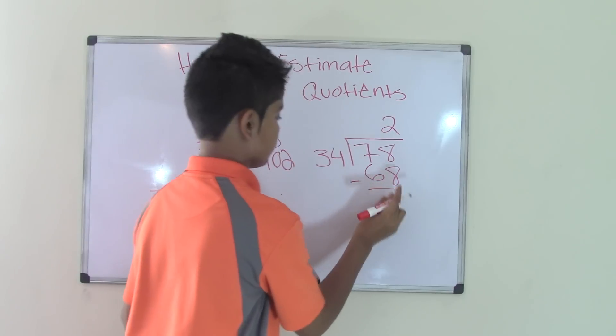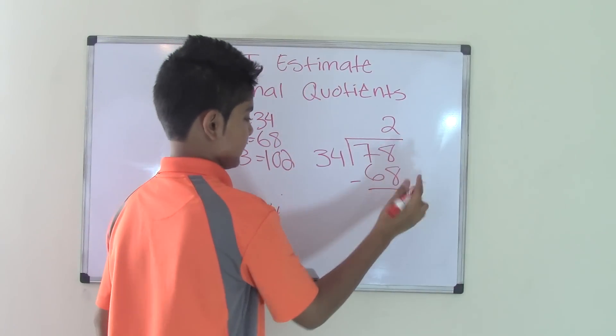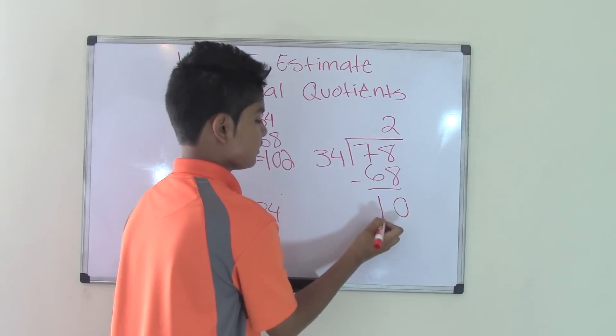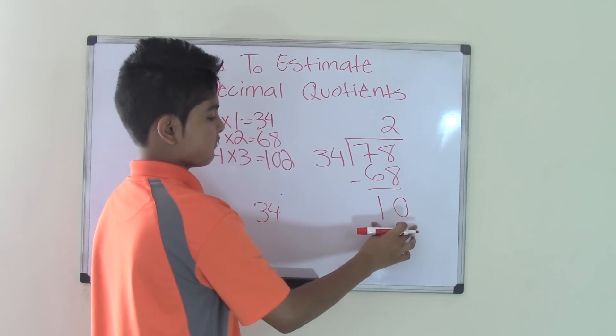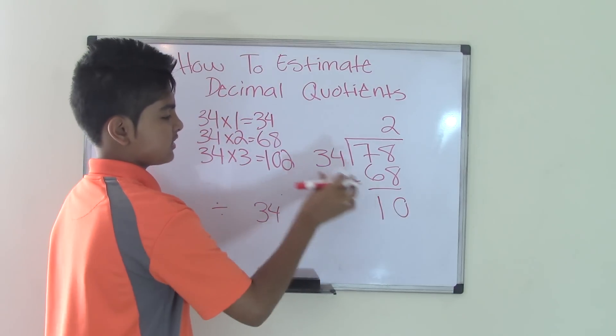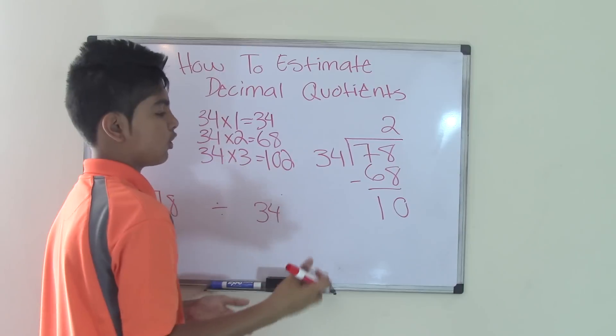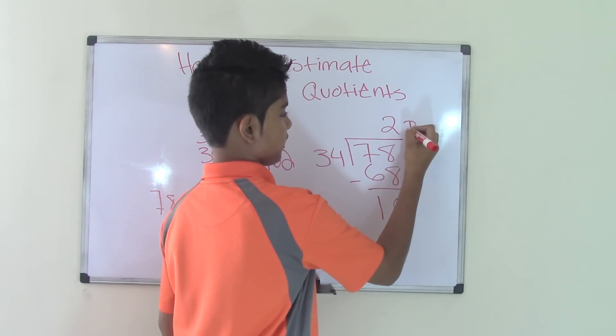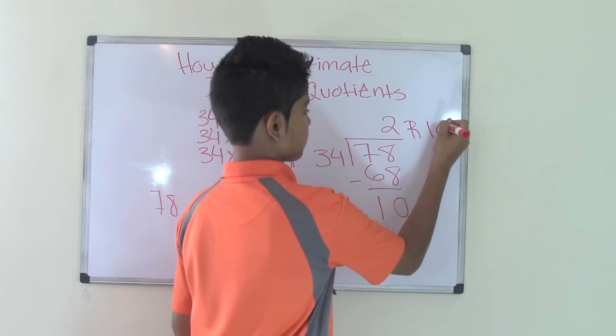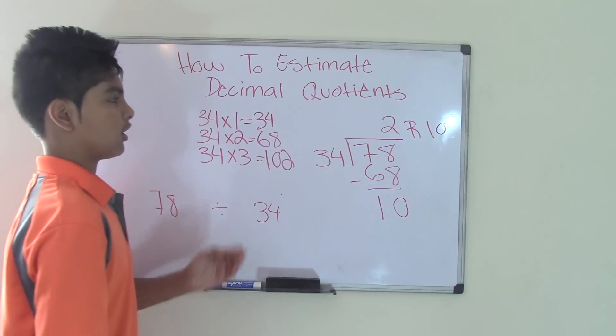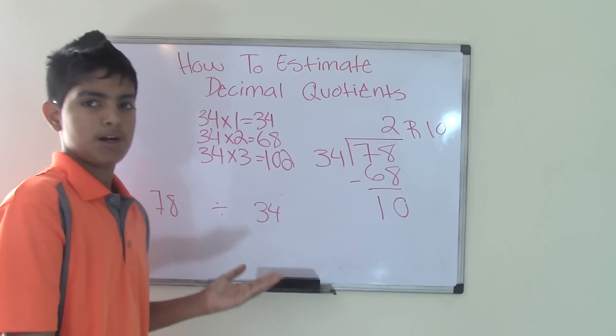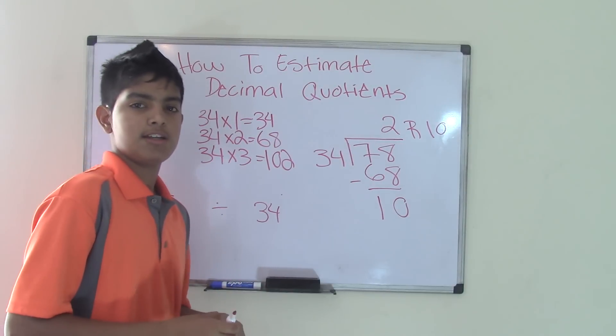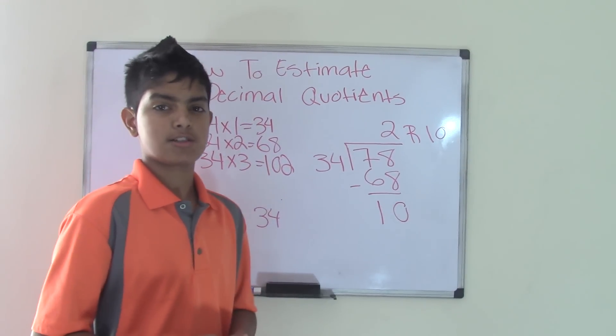Now, we subtract these two numbers. So, 8 minus 8 is 0. 7 minus 6 is 1. And now, we have a remainder of 10. 10 is less than 34, so it cannot go on, right? So, we bring this over here, R for remainder, and 10. This is going to be a quotient for a decimal problem. So, I hope you guys got this, and we'll see you guys next time in our next topic.